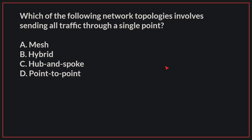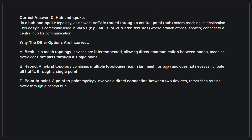Which of the following network topologies involves sending all traffic through a single point? The correct answer is C, Hub and Spoke. In a hub and spoke topology, all network traffic is routed through a central point before reaching its destination. This design is commonly used in WANs, where branch offices connect to a central hub for communication. Why the other options are incorrect? A, Mesh: in a mesh topology, devices are interconnected, allowing direct communication between nodes, meaning traffic does not pass through a single point. B, Hybrid: a hybrid topology combines multiple topologies and does not necessarily route all traffic through a single point. D, Point-to-point: a point-to-point topology involves a direct connection between two devices, rather than routing traffic through a central hub. Therefore, the correct answer is C, Hub and Spoke.